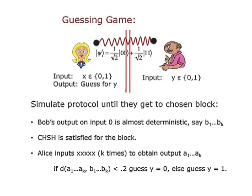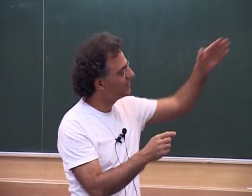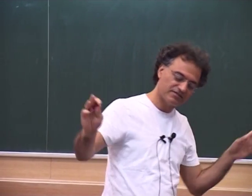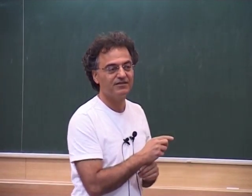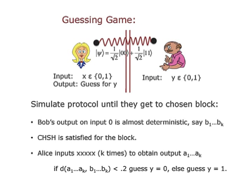How do they do this? They simulate the protocol until they get to the chosen block. Just before it, they stop the protocol and exchange all the information. Then they say: now let's start our guessing game. They put up the barriers, don't talk to each other again. Alice gets X, Bob gets Y. Alice knows that if Bob got a zero for this next block, his output is almost surely B1 through BK — some deterministic function of his previous output — and that the CHSH condition is satisfied in this block. Since Alice got input X, she just uses X repeated K times as her new block and obtains output A1.